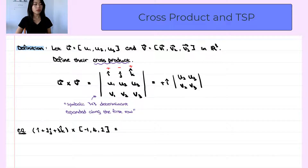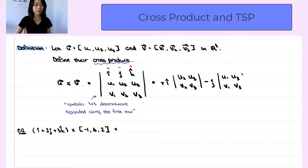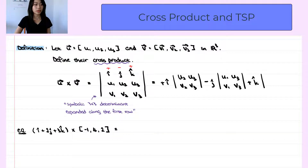Then the second entry in the first row is j hat, but we are going to alternate the sign. The first one we have plus, so the second one is minus j hat, times the 2 by 2 determinant after we eliminate the row and column of j hat, which is in the first row and second column. So we'll be left with u1, u3, v1, and v3. And the last component in the first row is k hat, and we alternate the sign, so here we have plus k hat, times the 2 by 2 determinant after we eliminate the first row and the third column, which is u1, u2, v1, and v2.